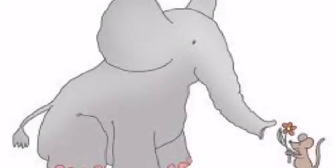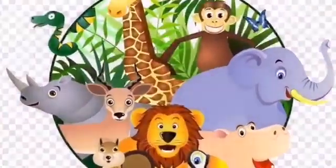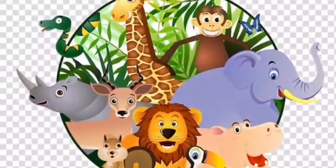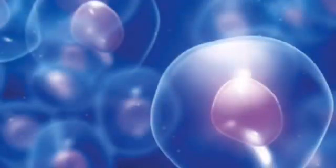It means larger animals do not have bigger or larger cells but they have more number of cells. Thus the cells of an elephant are not necessarily larger than those of tiny animals like rats. So we can conclude that the size of an organism is dependent upon the number of cells and not on the size of the cells.